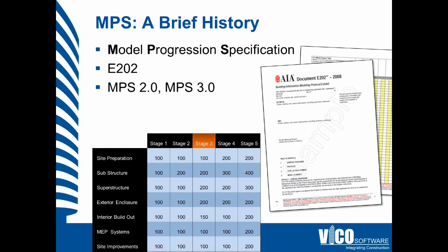Let's start with a brief history of the Model Progression Specification. The AIA has adopted part of this work that started back in 2005 at VICO. That resulted in a document called E-202, using a format with building element categories on the left side — the main systems in your project — and project stages across the top. Each number represents the level of development or detail to achieve for that system at that stage.